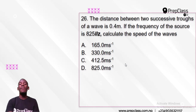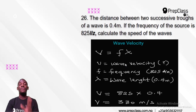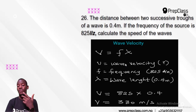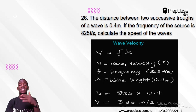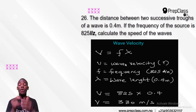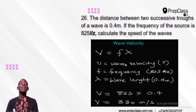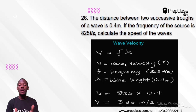The formula is simply this: V equals F lambda. V is the wave velocity — that is the speed of the wave. So under the topic of waves, we learn that the speed of wave is V equals F lambda, where F is my frequency and lambda is my wavelength.